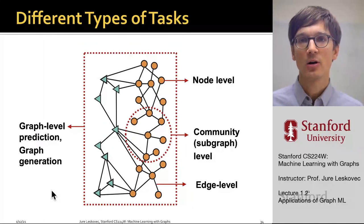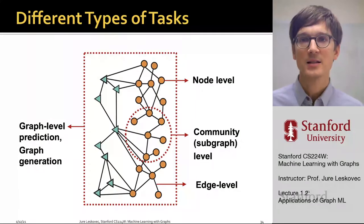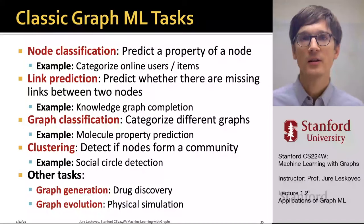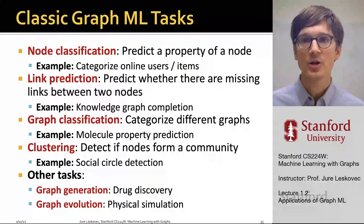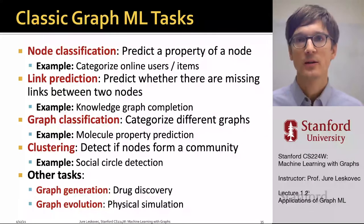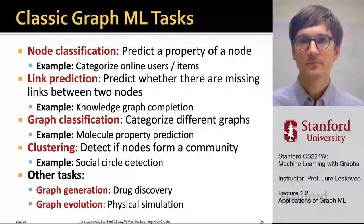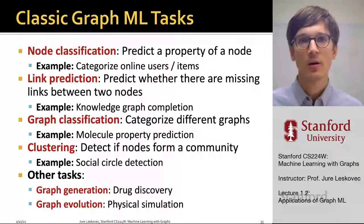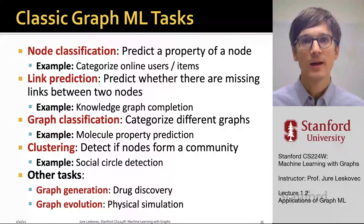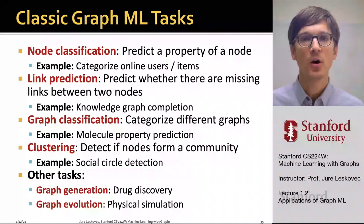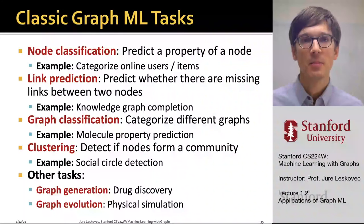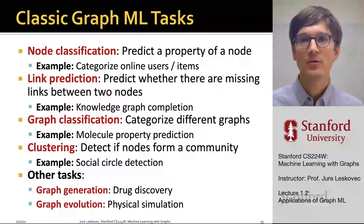What I'm going to talk about next is go through these different levels of tasks and show you different applications and different domains where these types of methods and models can be applied. For node-level tasks, we generally talk about node classification, where we are trying to predict a property of a node — for example, categorize online users or categorize items.